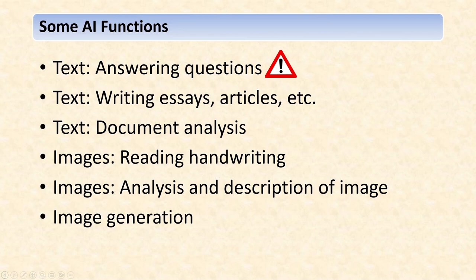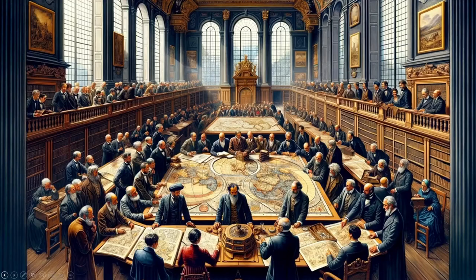The last function is image generation — I could see it maybe eventually relating to maps. Maybe I could tell it to draw a map or draw land grants or things like that. Right now it's kind of just for fun. I asked it to create an image of the meeting of the Historic Mapping Congress, and this is what it came up with.